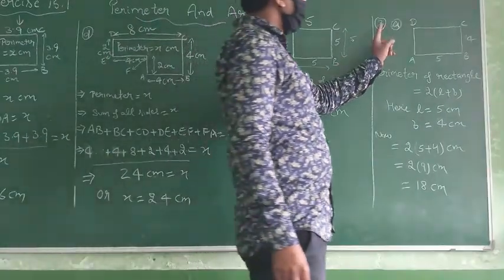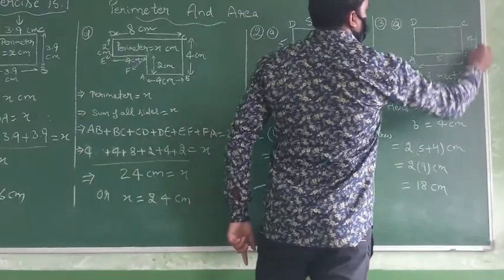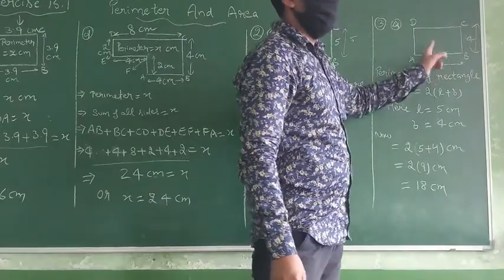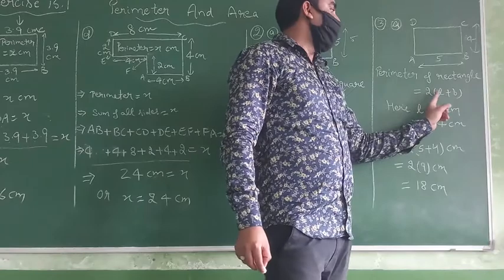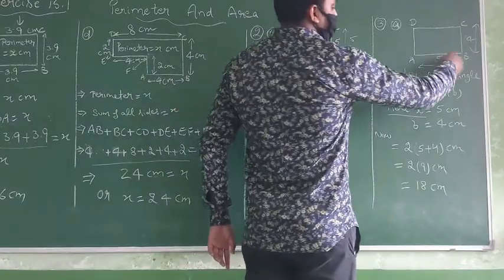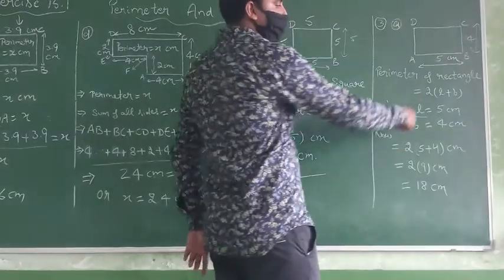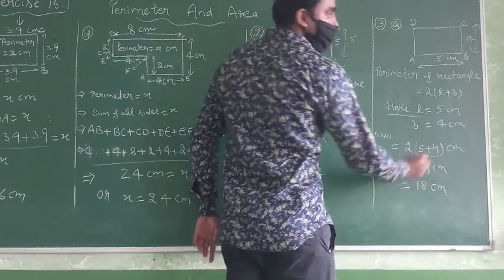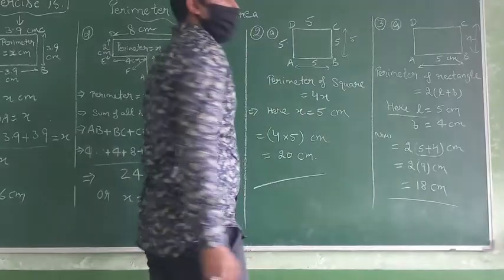Now come to question number 3. ABCD: length is 5, breadth is 4. It means the shape belongs to rectangle. What is the formula of rectangle? Perimeter of rectangle equals 2 times length plus breadth. So we have length is 5 cm, breadth is 4 cm. Formula is 2(L + B). 2, L is 5, breadth is 4. We will solve bracket: 5 plus 4 equals 9. 2 multiply by 9 equals 18. This is 18 centimeter.